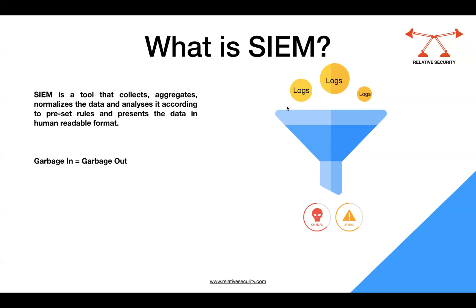SIEM refers to a comprehensive approach to managing and analyzing security information and events in an organization's IT infrastructure. The primary purpose of a SIEM system is to provide real-time analysis of security alerts generated by various hardware and software solutions, by collecting, aggregating, and correlating log data from a wide range of sources. It analyzes data according to predefined rules and presents findings in a human-readable format, with the primary goal of facilitating proactive threat detection and empowering security professionals to respond swiftly to potential security incidents.